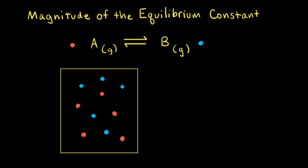The magnitude of the equilibrium constant tells us the relative amounts of products and reactants at equilibrium. For example, let's look at a hypothetical reaction where gas A turns into gas B. Gas A is represented by a red sphere, and gas B is represented by a blue sphere. Down here we have a particulate diagram showing an equilibrium mixture of our hypothetical reaction.